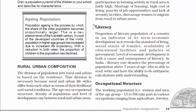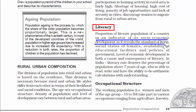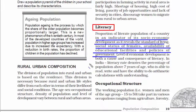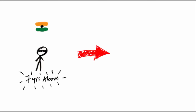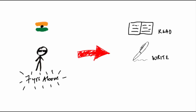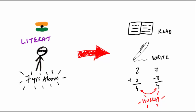The next topic is literacy. Knowing the literacy rate of a population tells a lot about its socioeconomic condition, standard of living, social status of females, availability of educational facilities, and government policies. In India, the literacy rate means the percentage of people above seven years of age who can read, write, and do basic math with understanding. If a person can do all of this, they are considered literate.